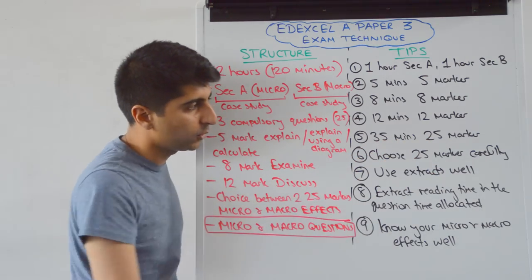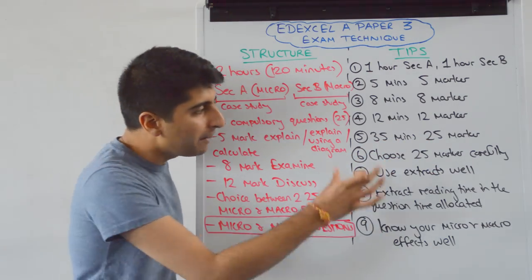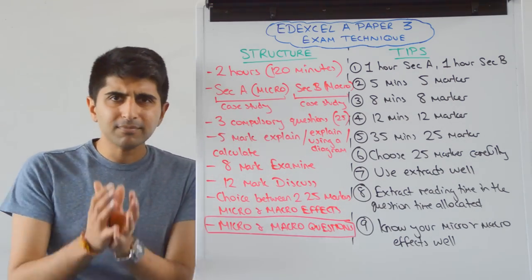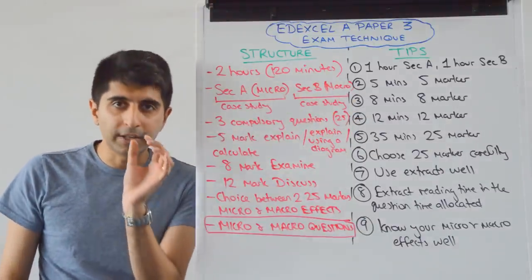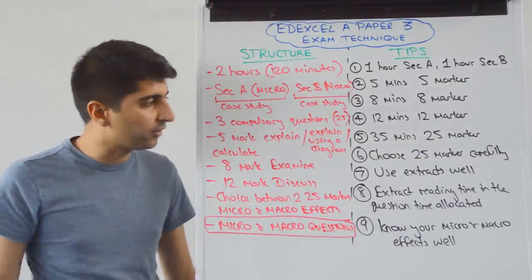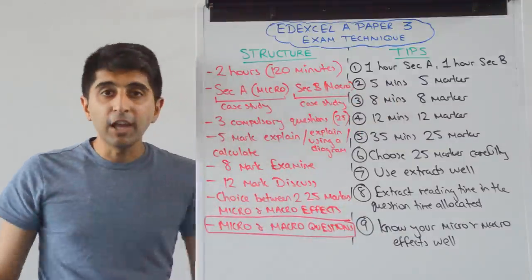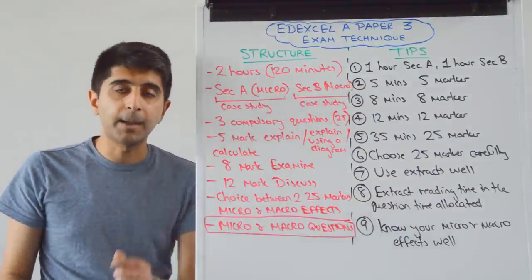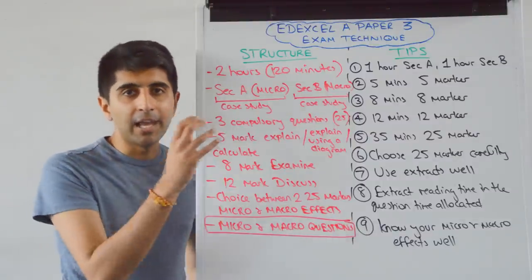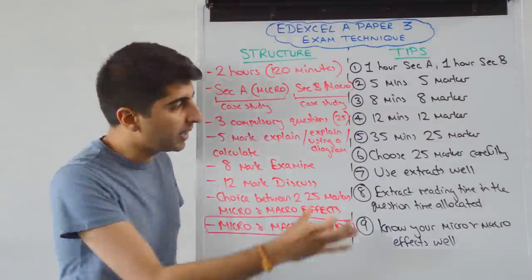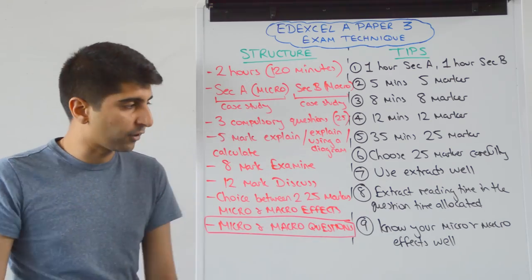It's important to stick to 35 minutes for the 25-marker, and choose your 25-marker very carefully. Make sure you use the extracts well — all the questions will be based around the extract material, so use them well for application. Crucially, the extract reading time is within the time for the question, unlike Paper 1 and Paper 2 where you have specific reading time. In Paper 3 you're time-constrained, so you must use the extract material while answering the questions.